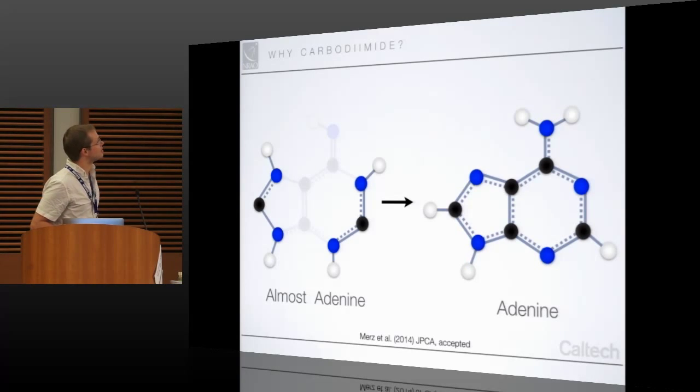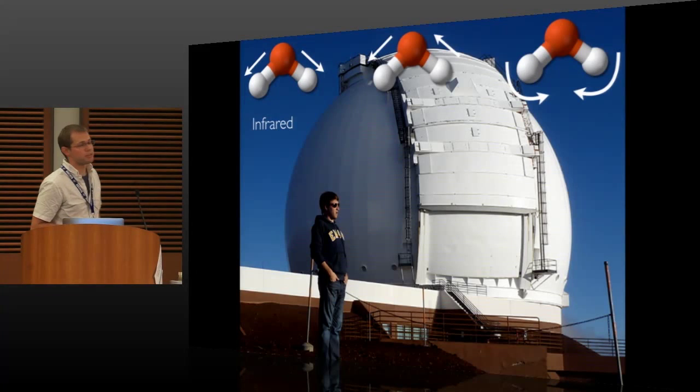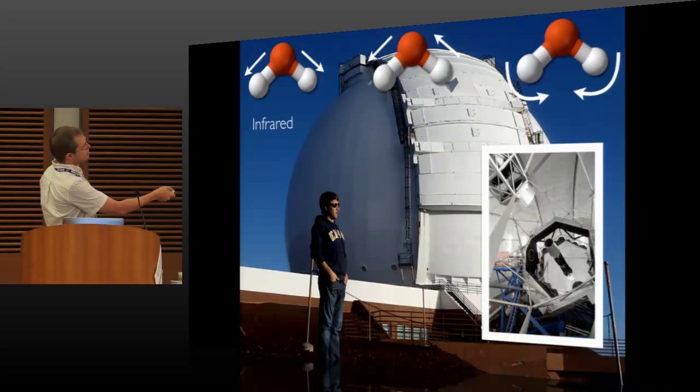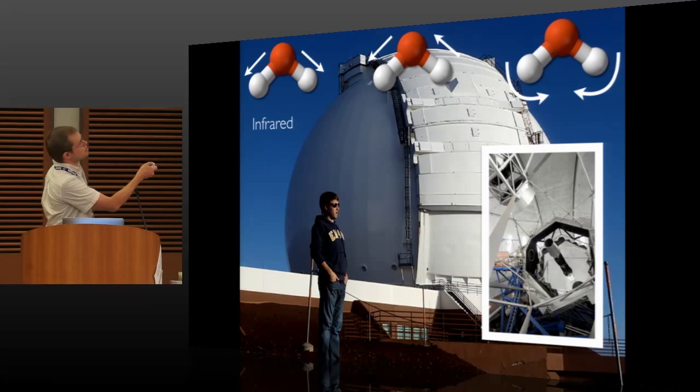So moving on to how we might detect a molecule in space, just a brief overview. There's two main methods. One is to use infrared spectroscopy. Using something like the Keck telescope here, this is optical light, so we use mirrors and cameras, and this is looking at vibrations of molecules.